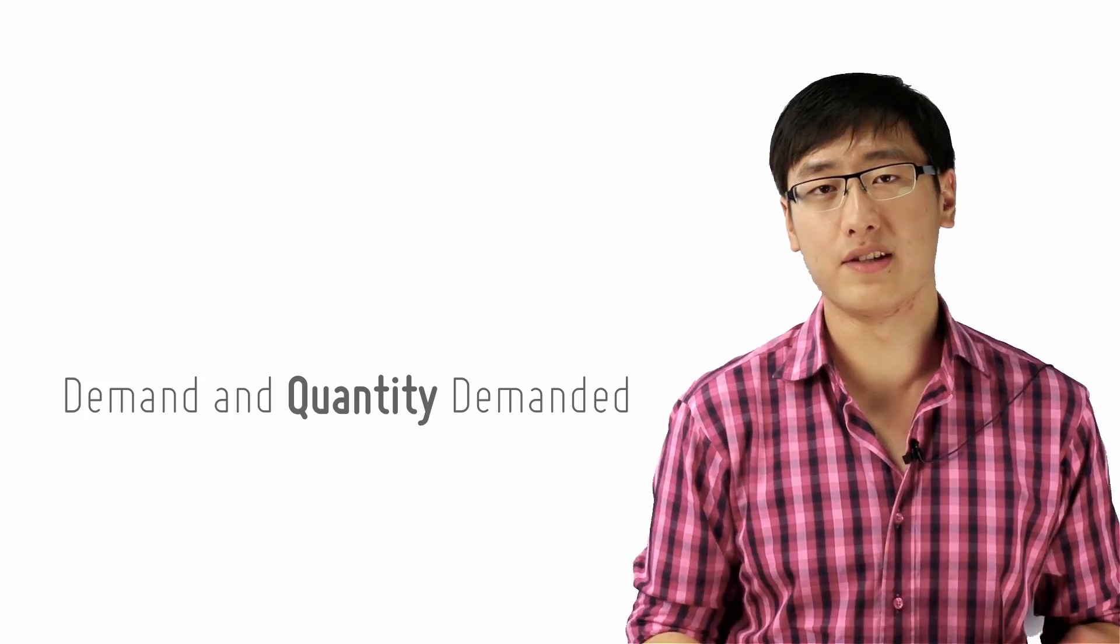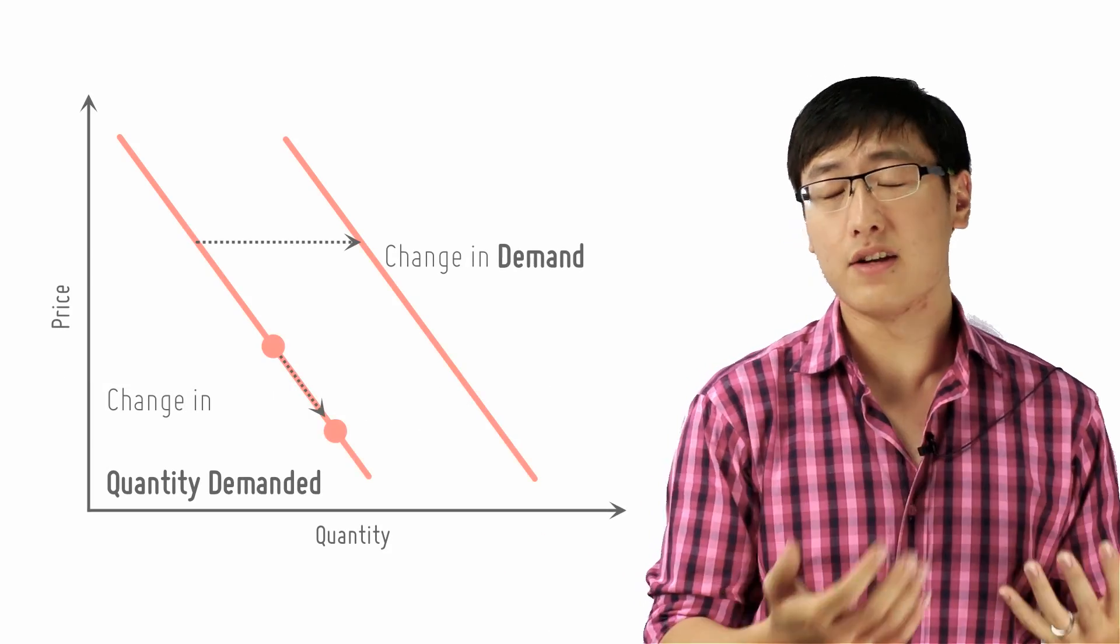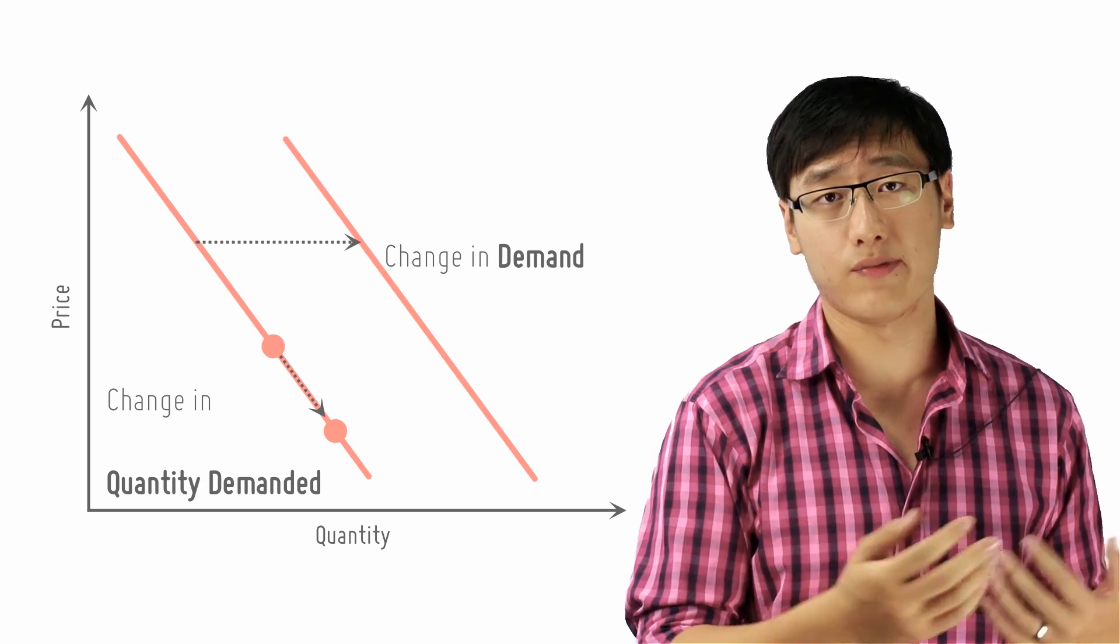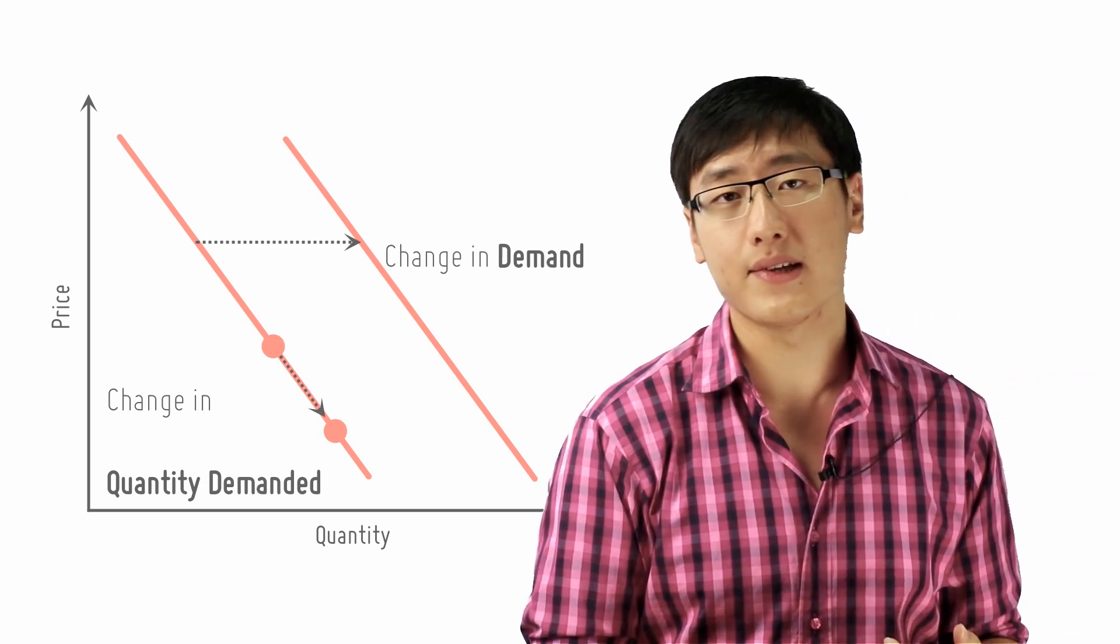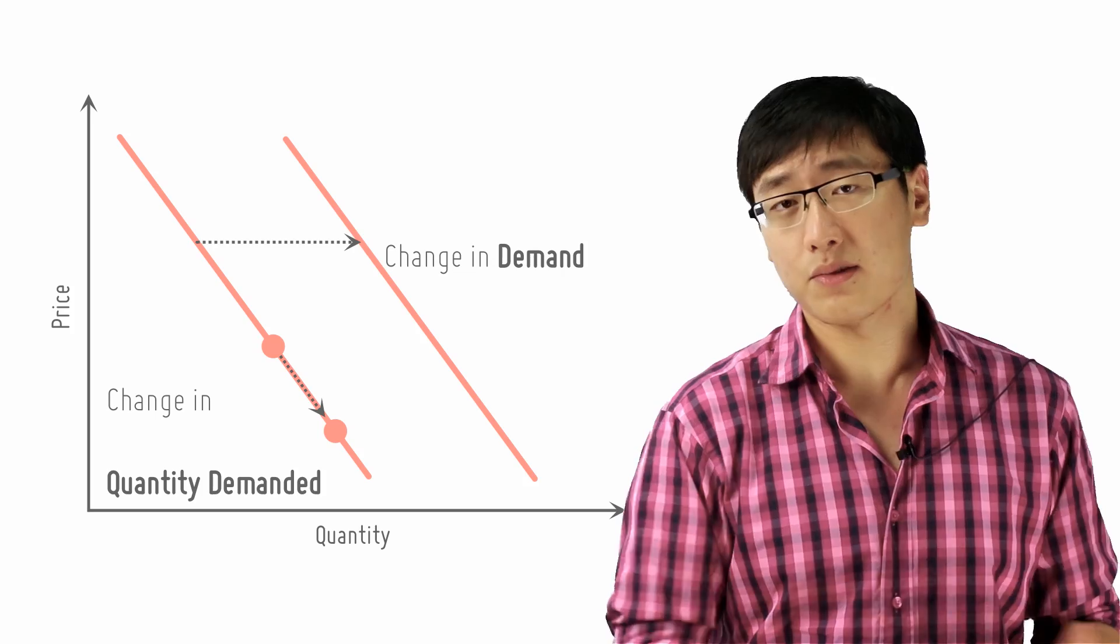There's a difference between demand and quantity demanded because one shifts the curve and the other shifts along the curve. Now I know newspapers kind of use these two terms interchangeably and that is wrong. So here's the difference.